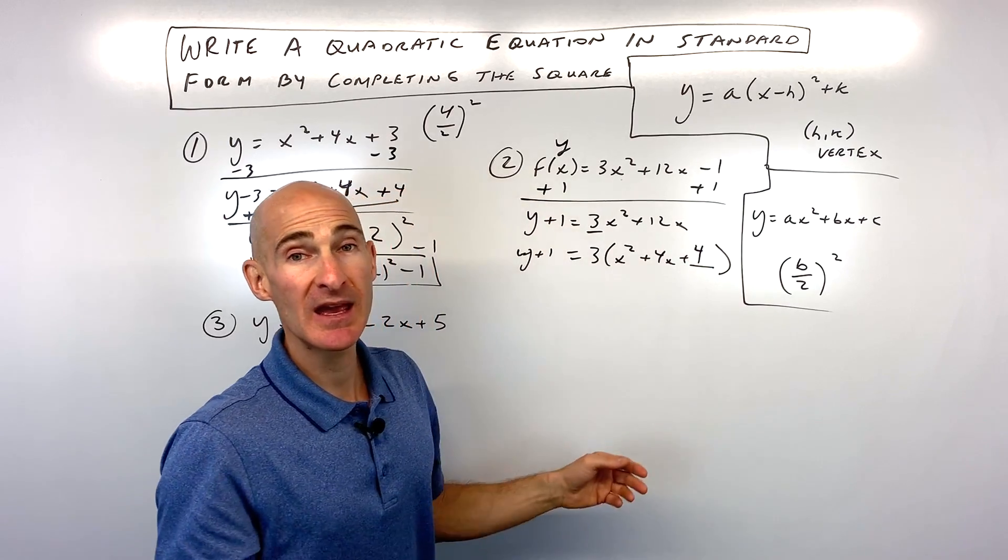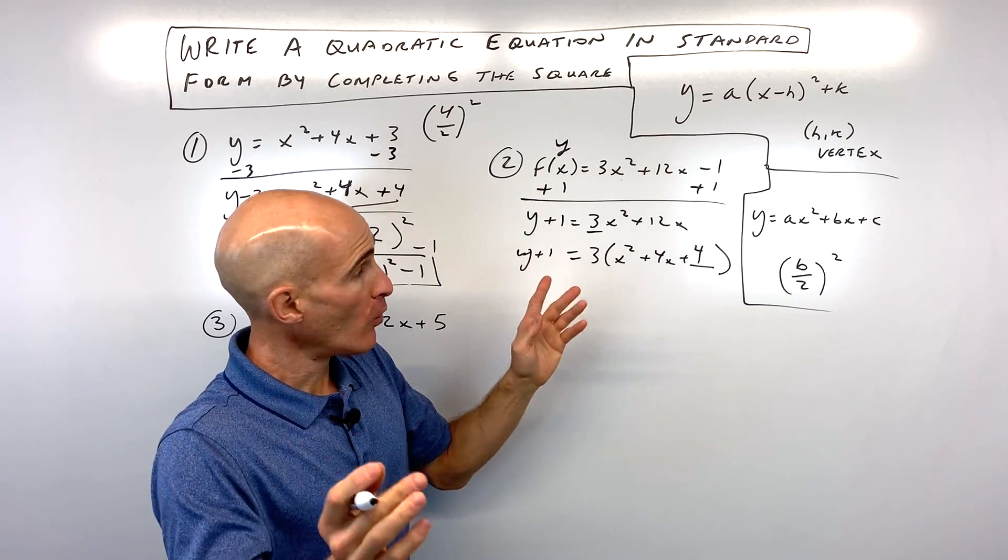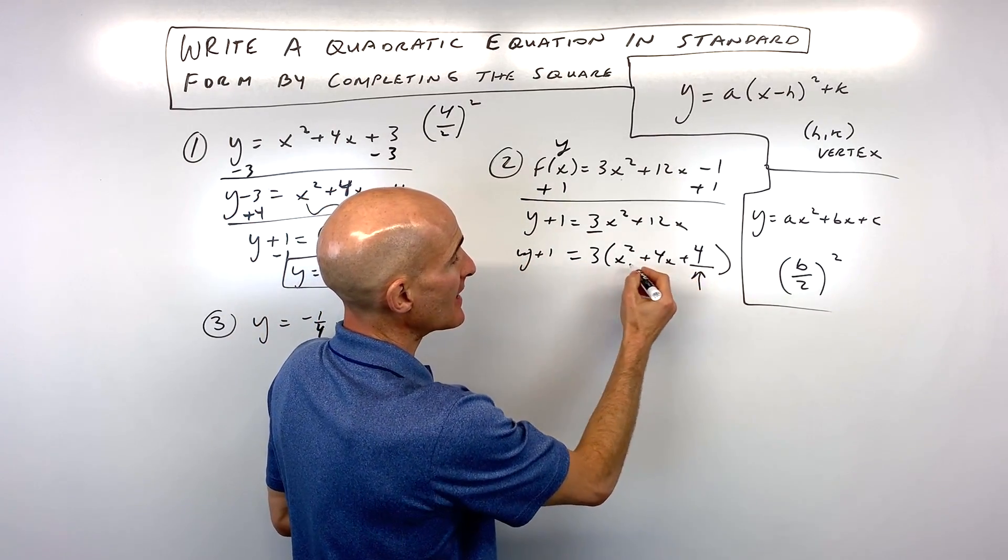Now the mistake that students make is that they say, all right, you know, Mario, I added 4 to the right, don't I add 4 to the left? Well, the thing is to see how this 4 is inside of the parentheses.